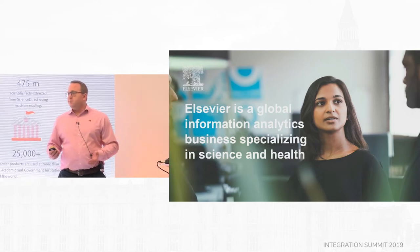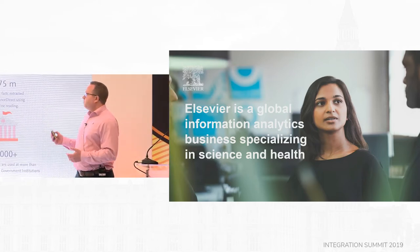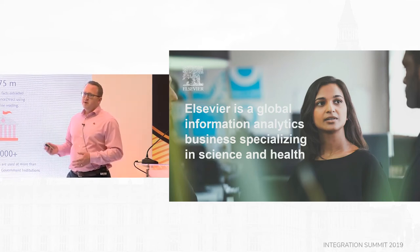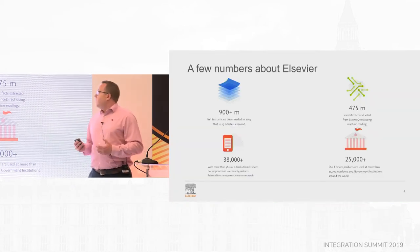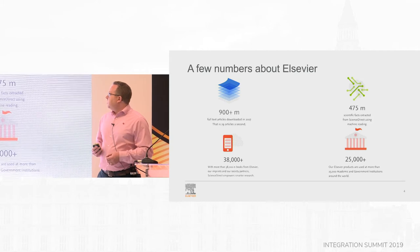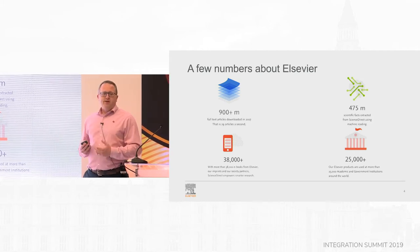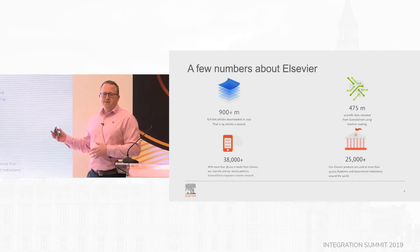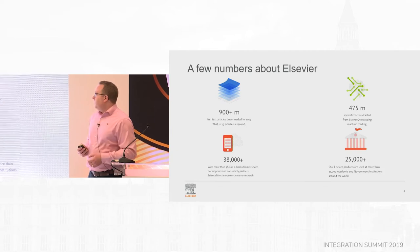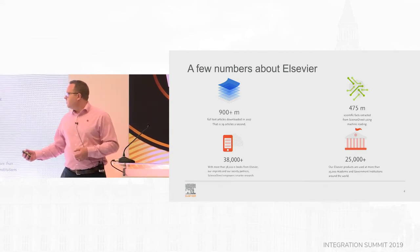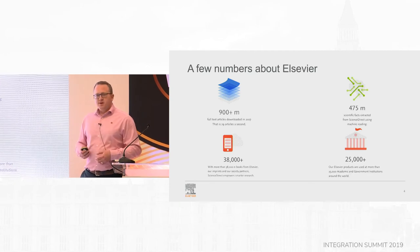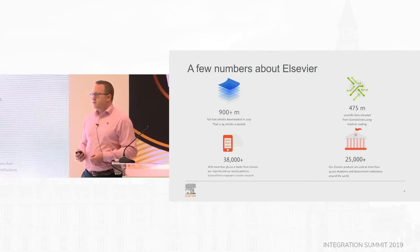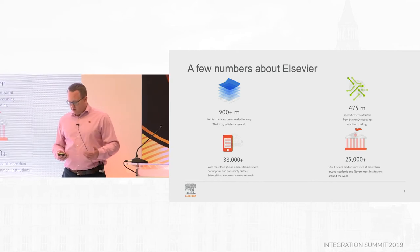Some numbers about the company — they're pretty big. The Science Direct platform has hundreds of millions of downloads each year. The analytics and machine learning behind the scenes is extracting hundreds of millions of facts automatically from that content. You just couldn't do that kind of volume with manual processing. We've got tens of thousands of e-books from many different publishers and societies, and our products are consumed by tens of thousands of institutions worldwide. It's a truly global company.